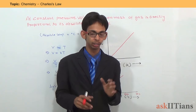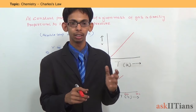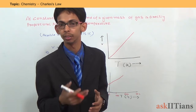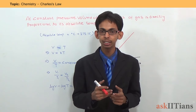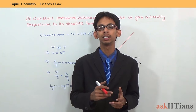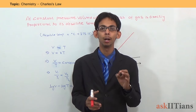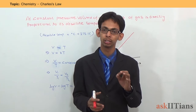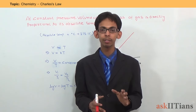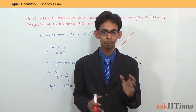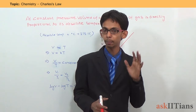Now, what is absolute temperature? There are three scales for measuring temperature. The first one is degree Celsius, the second one is Fahrenheit, and the third one is Kelvin. The Kelvin scale is known as the absolute scale for temperature, and whenever we represent or report a temperature in Kelvin, it is known as absolute temperature.